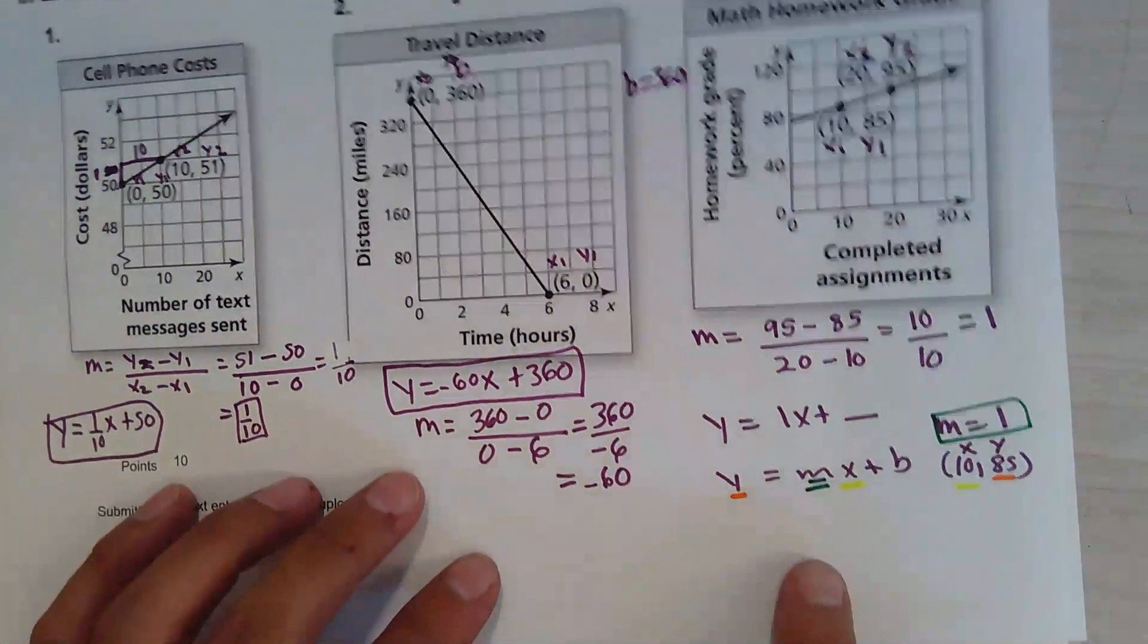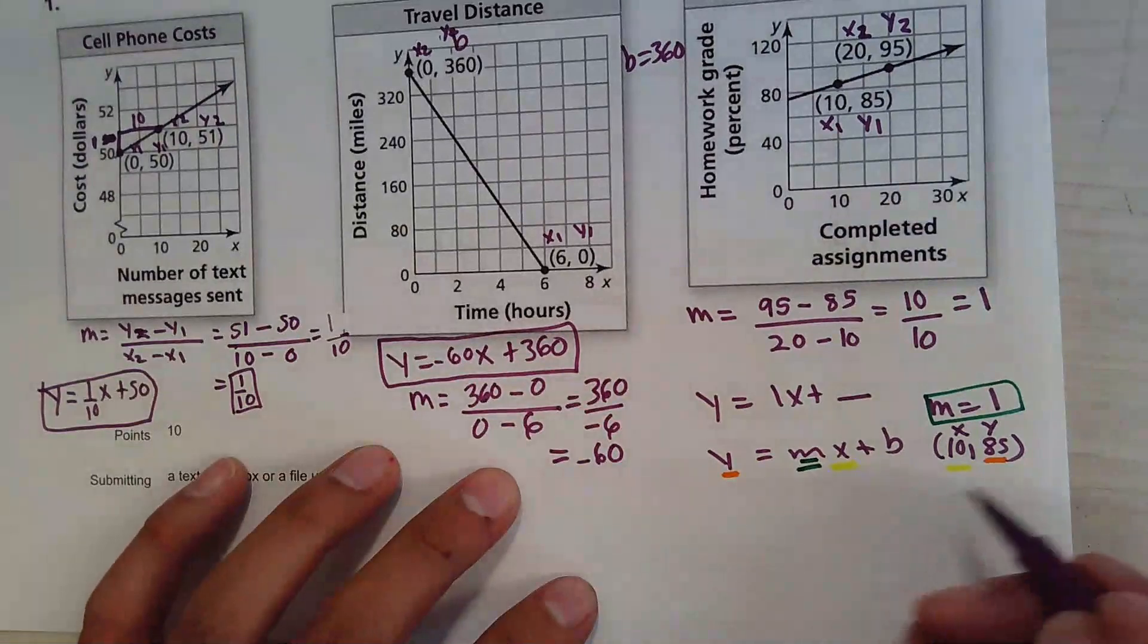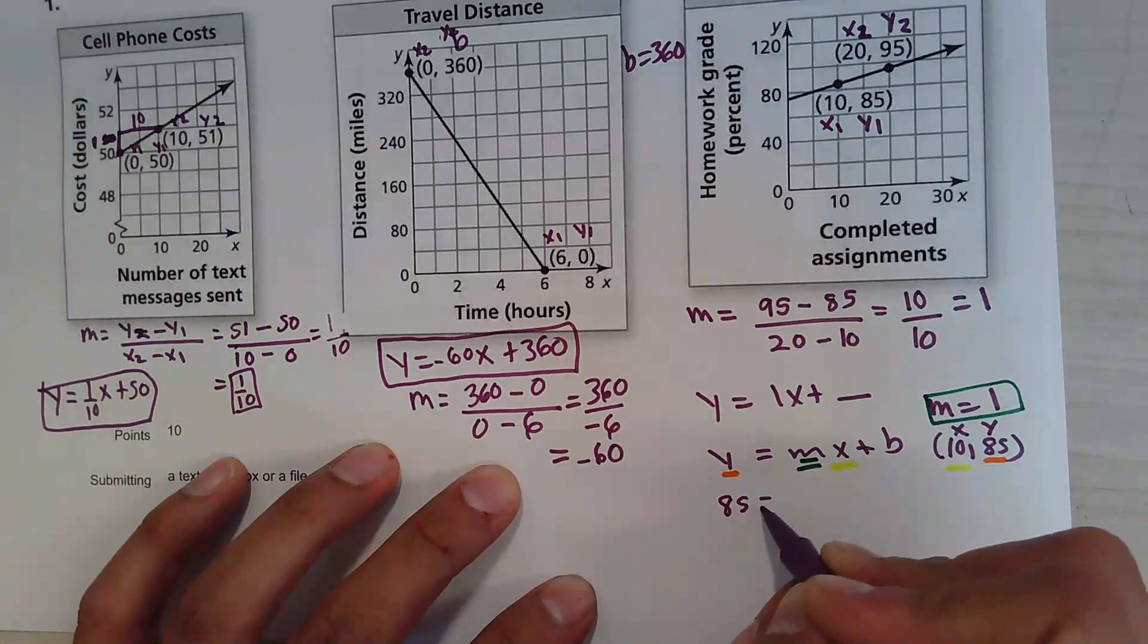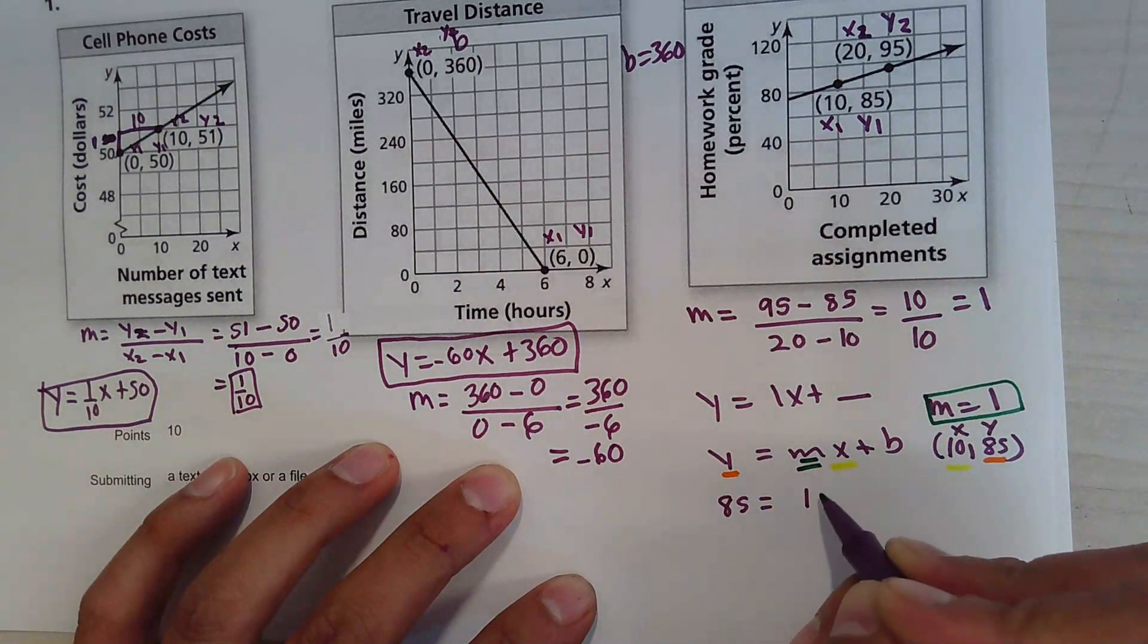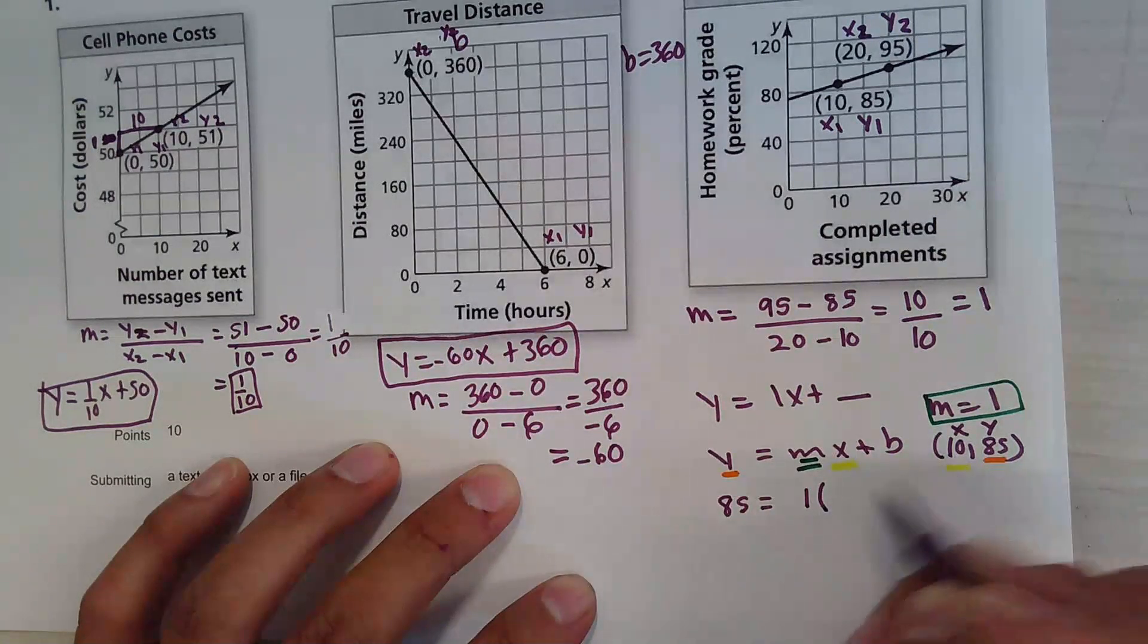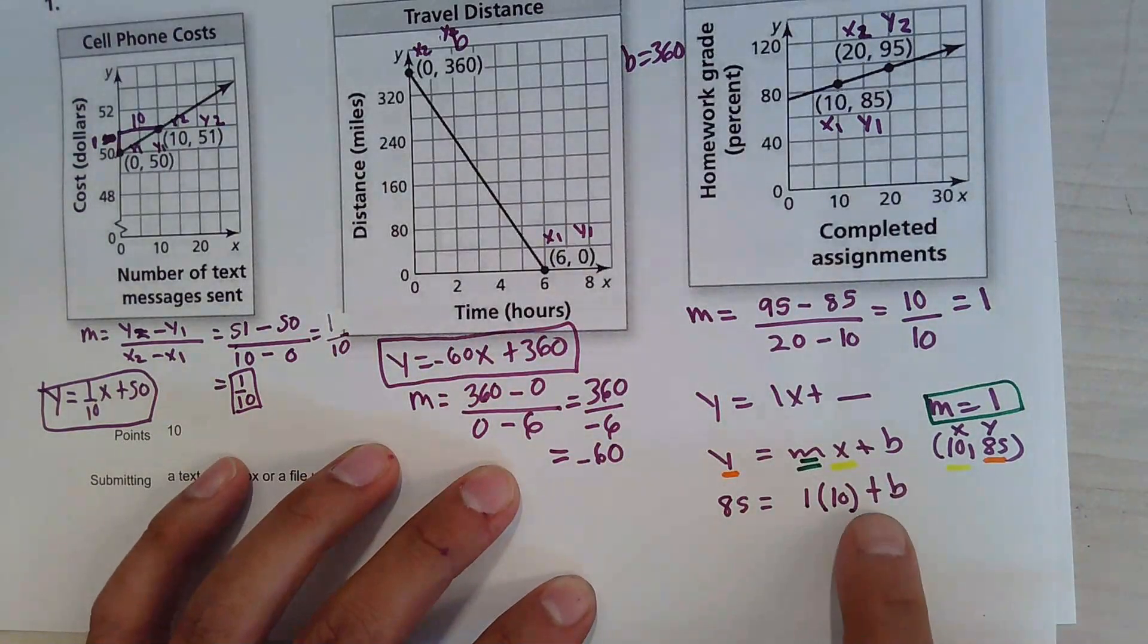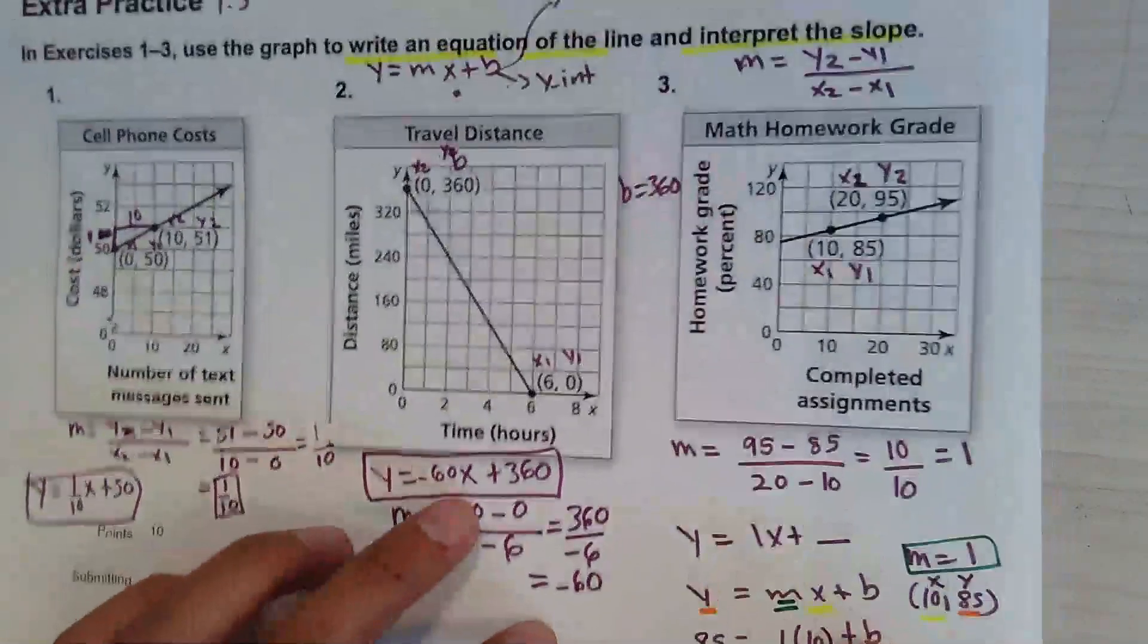Now let's show the answer. This will be 85, the slope is given by 1, the x is given by 10, plus b. b is what we're looking for. b is the y-intercept.